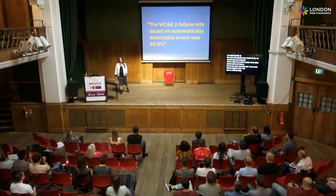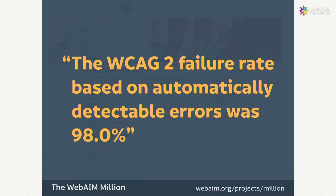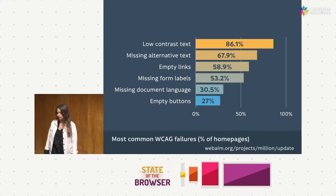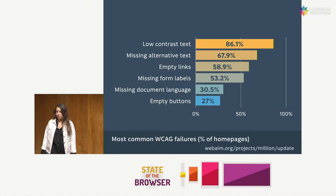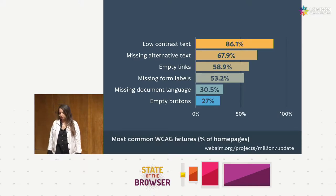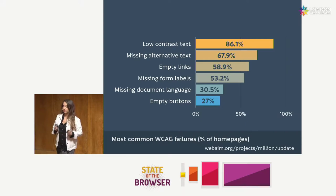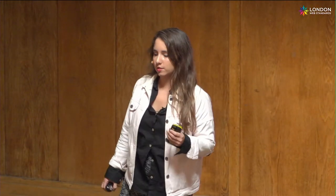Working back to the WebAIM 1 million pages: the failure rate based on automatically detectable errors is 98% — that's the most recent version run this August. The top accessibility errors found: low contrast text around 86%, missing alternative text 67.9%, empty links 58.9%, missing form labels 52.2%, missing document language 30.5%, and empty buttons 27%. So what are the straightforward fixes for these big problems?